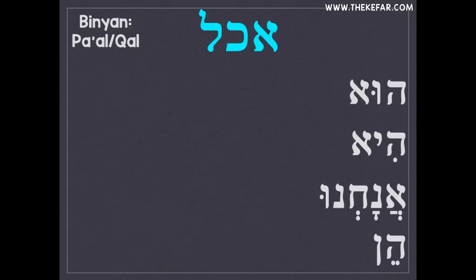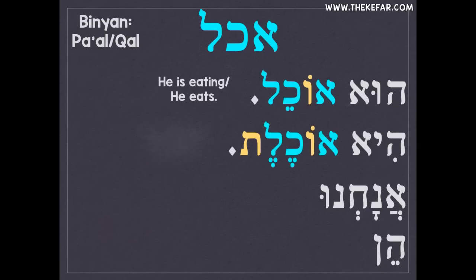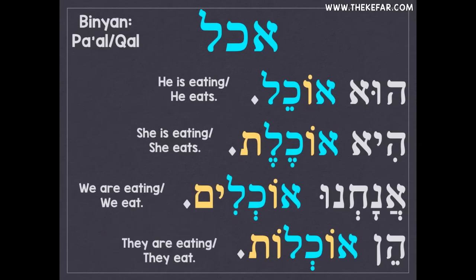'He is eating' or 'he eats' is hu ochel. 'She is eating' or 'she eats' is hi ochelet. He eats versus she eats — masculine singular versus feminine singular. For masculine plural, 'they are eating' is hem ochlim. And for feminine plural, 'they are eating' is hen ochlot.